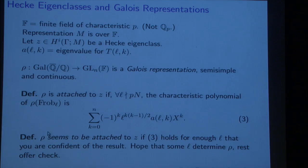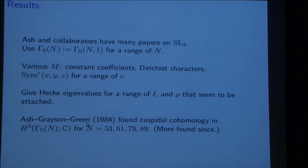A definition is that the Galois representation rho is attached to the cohomology class Z if, for every L not dividing P and N, the characteristic polynomial of Frobenius for the representation is this classic polynomial. It's got the Hecke eigenvalue in there. There's another definition: rho seems to be attached if it holds for enough L that you're confident of the result. In our recent project we've gotten as high as at least T_{17,1} for SL4 when we really had to, to uniquely identify a rho. I didn't even know that we could get to T_{17,1}, but we could.